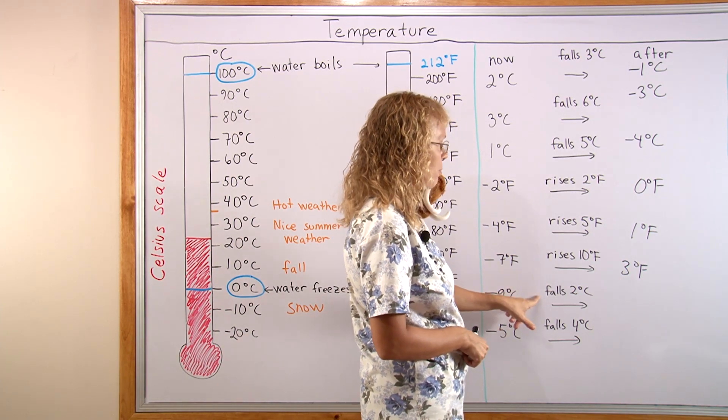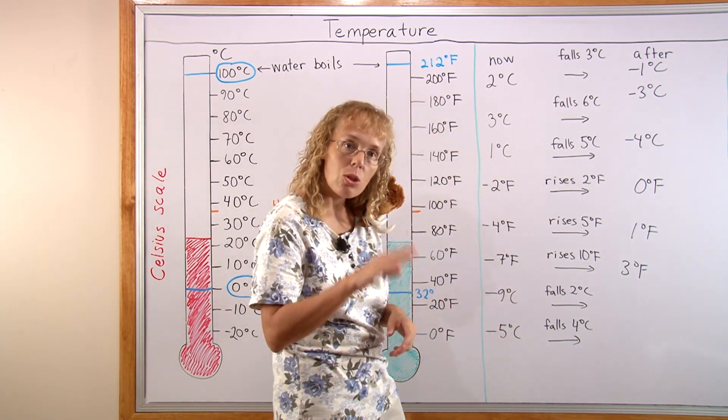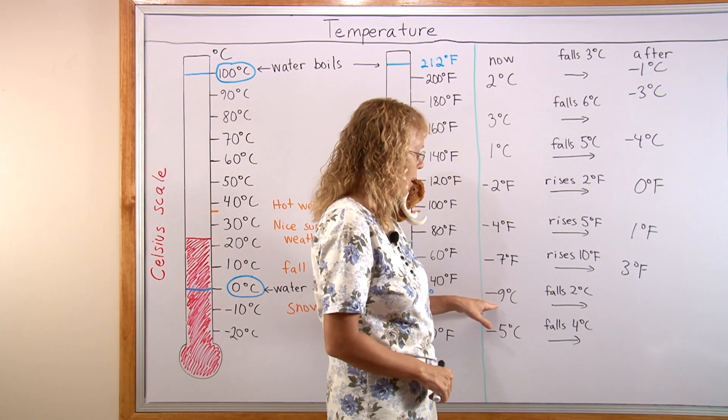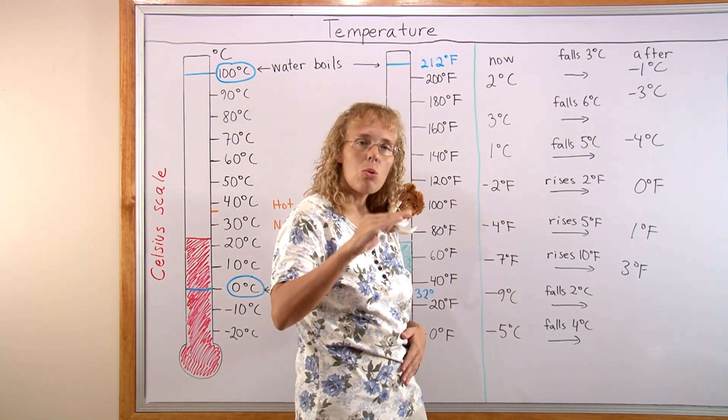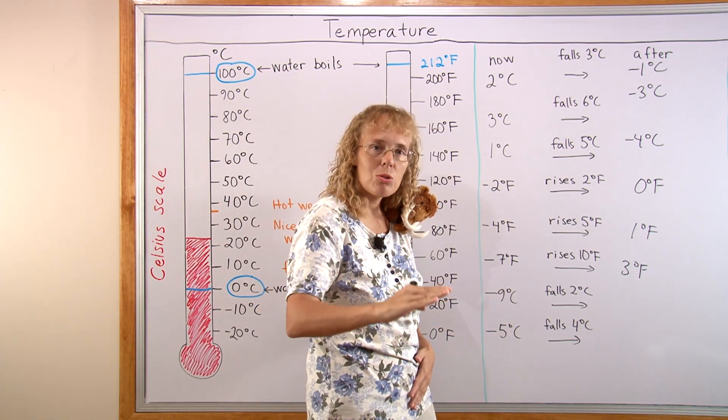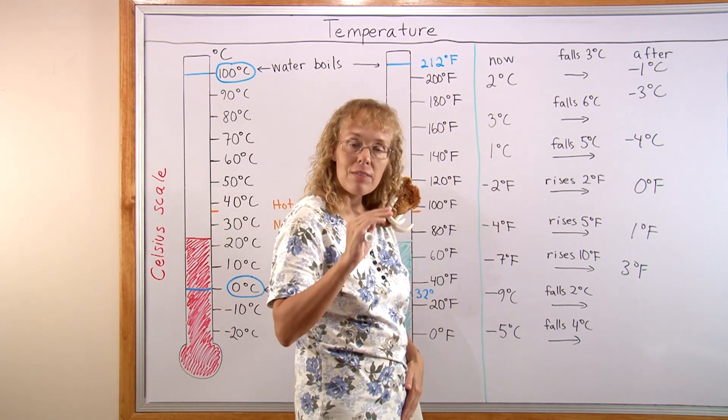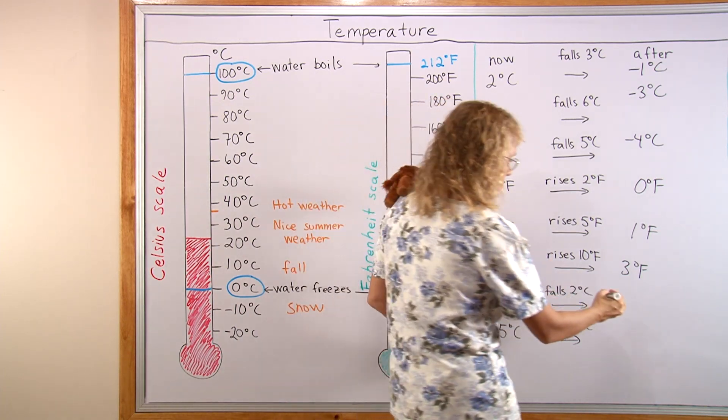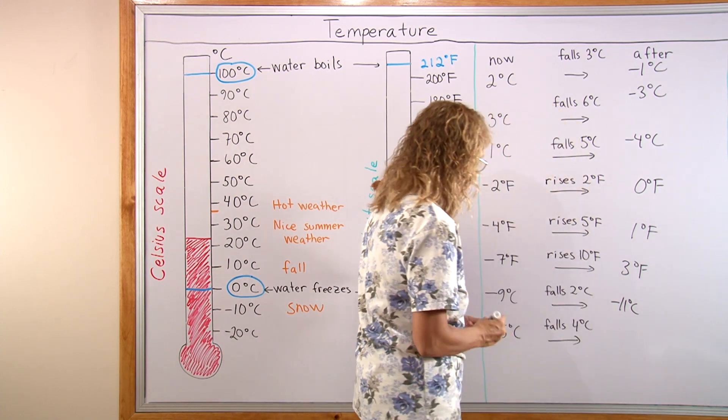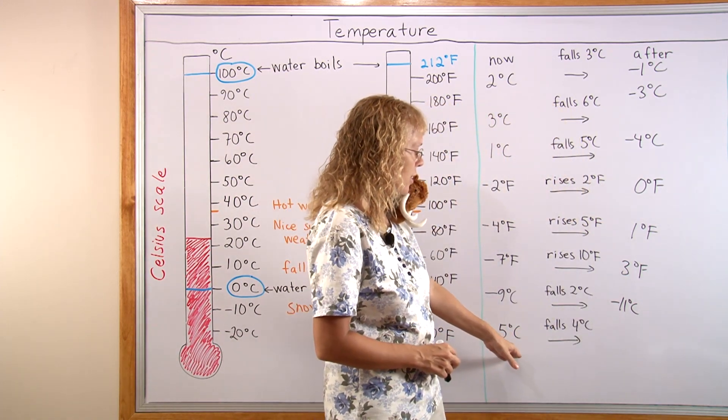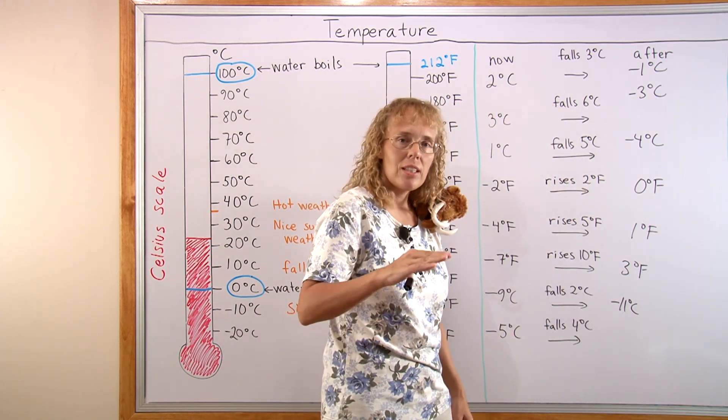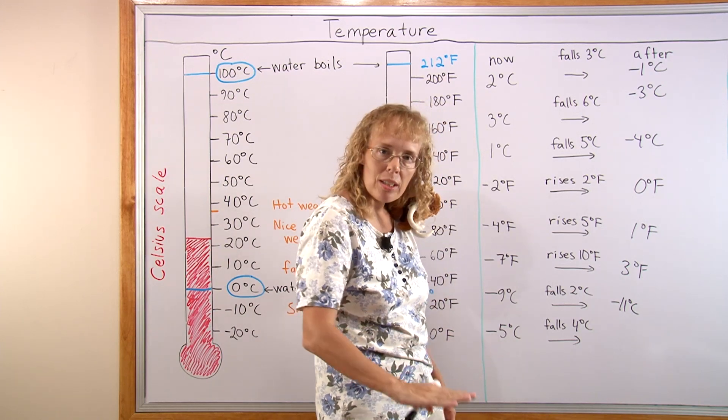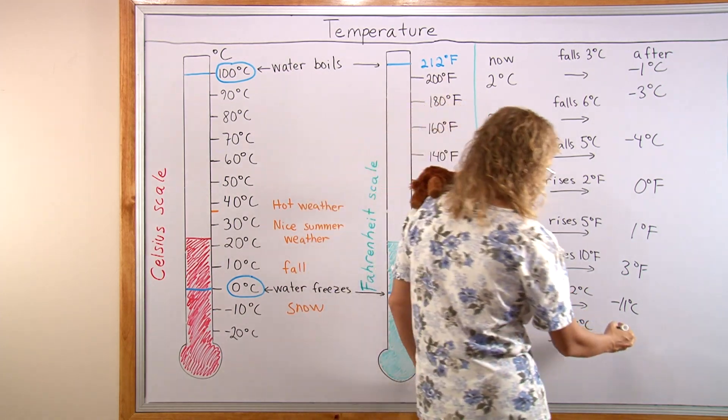Negative 9 degrees Celsius and the temperature falls 2 degrees. It gets colder. So we are at negative 9 and the temperature drops and goes down. It goes to negative 11 degrees. Or if you have minus 5 degrees and it falls 4 degrees, it gets colder, more negative. So we have minus 9 degrees.